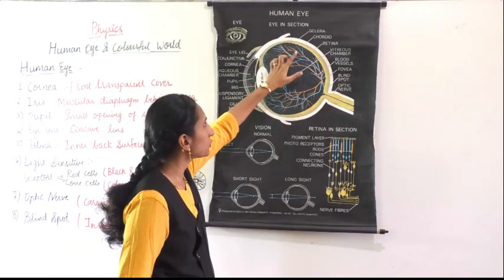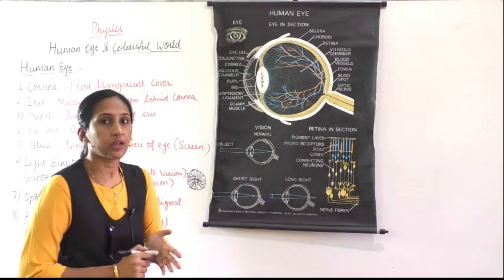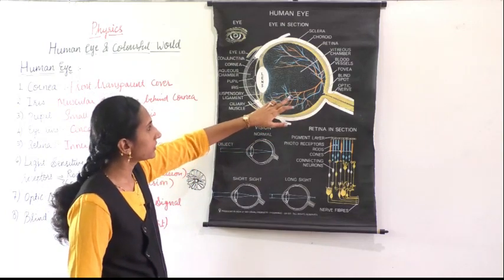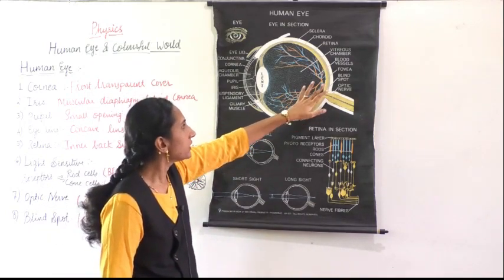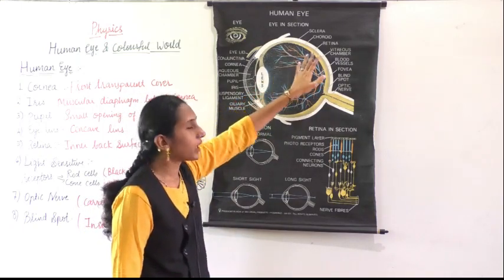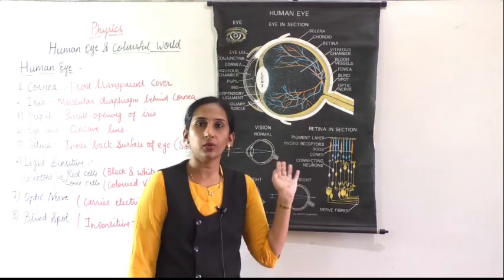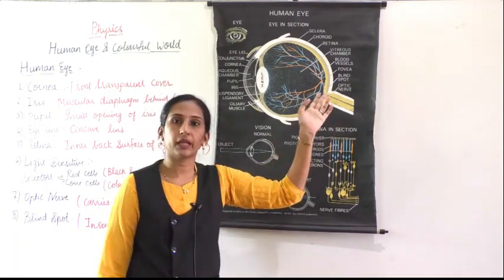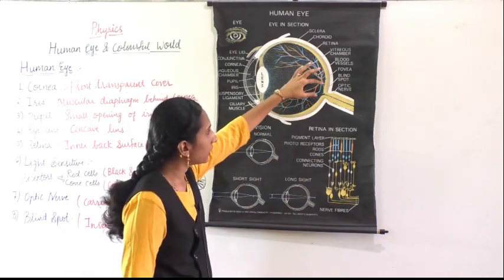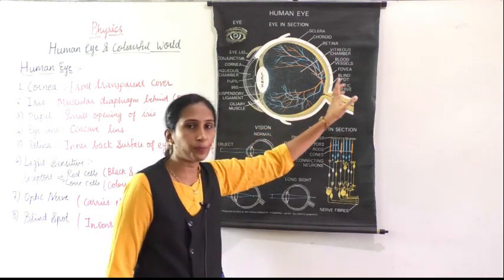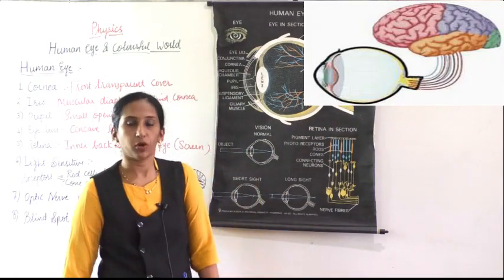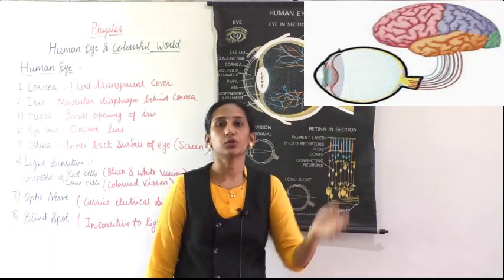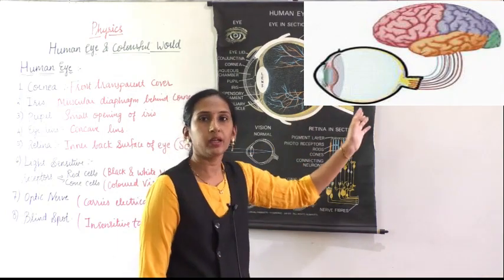Always remember: the retina contains light receptor cells called rod cells and cone cells. Whatever you see, the image formed on the retina is converted into electrical signals that are passed through the optic nerve to the brain, where the brain recognizes and identifies the objects.